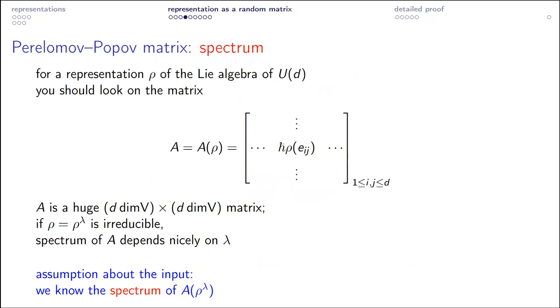From now on we will essentially forget completely about the Lie group and about the representation of the Lie group — henceforth ρ is just a representation of the Lie algebra. In fact I could have started from the very beginning with a Lie algebra representation, but it's more difficult to convince people that representations of Lie algebras are interesting.